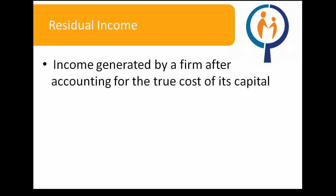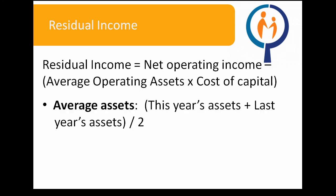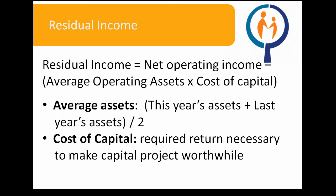These values are therefore most useful when compared against previous company ROAs or those of a similar company. Residual income, on the other hand, is income generated by a firm after accounting for the true cost of its capital. It can be calculated through the formula net operating income minus bracket average operating assets multiplied by the cost of capital, where average assets consist of this year's assets and last year's assets divided by two, and the cost of capital is the required return necessary to make a capital project worthwhile.